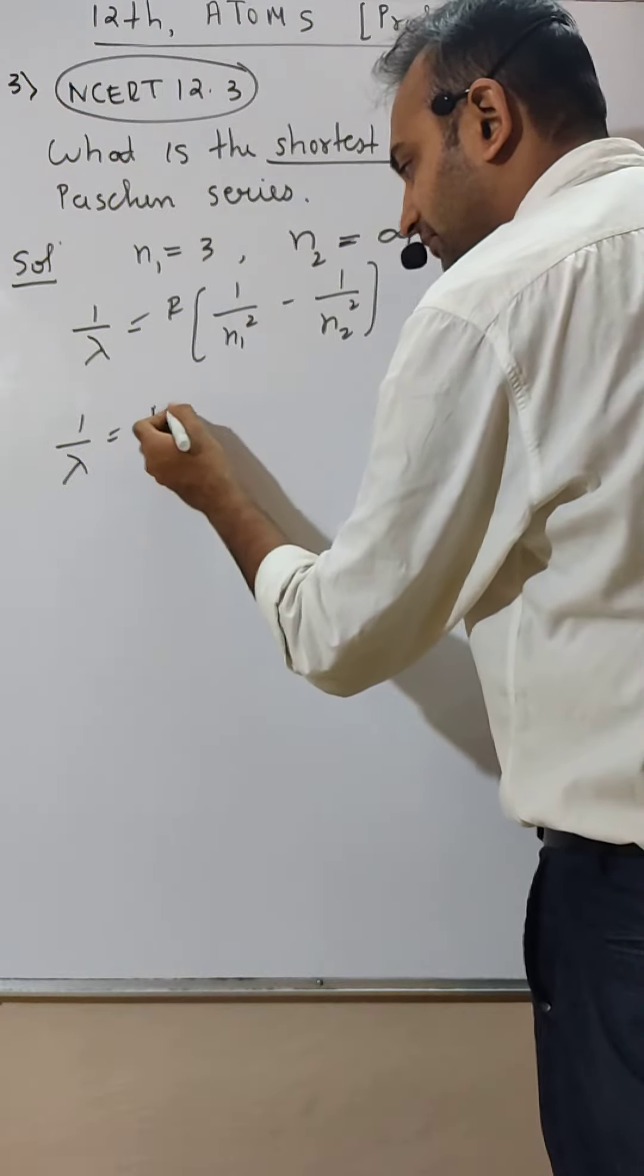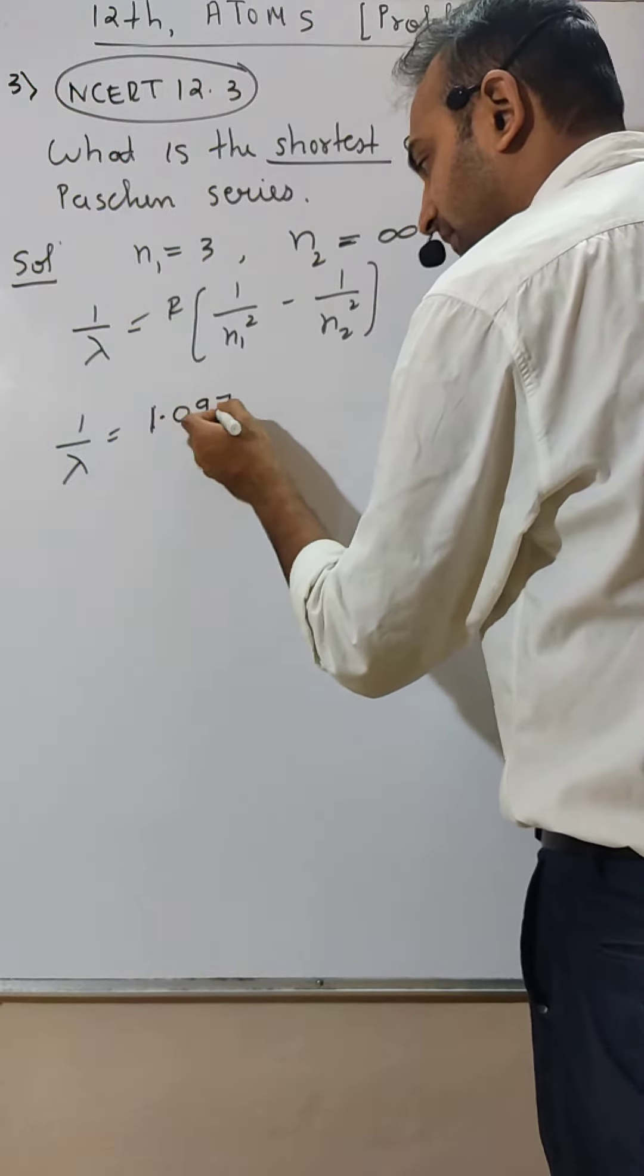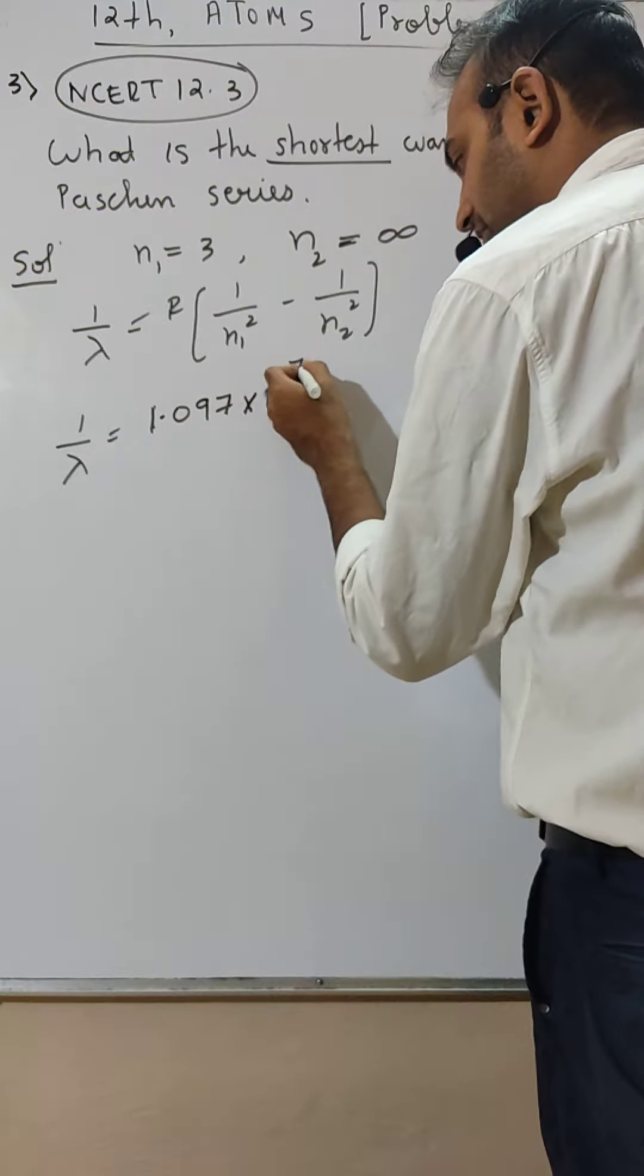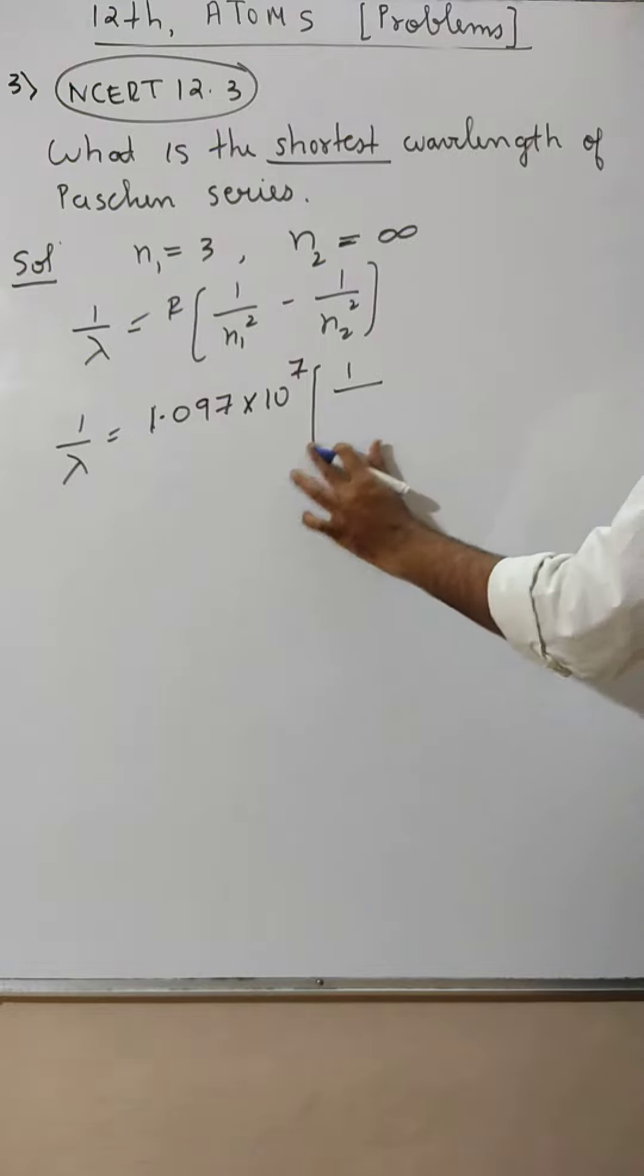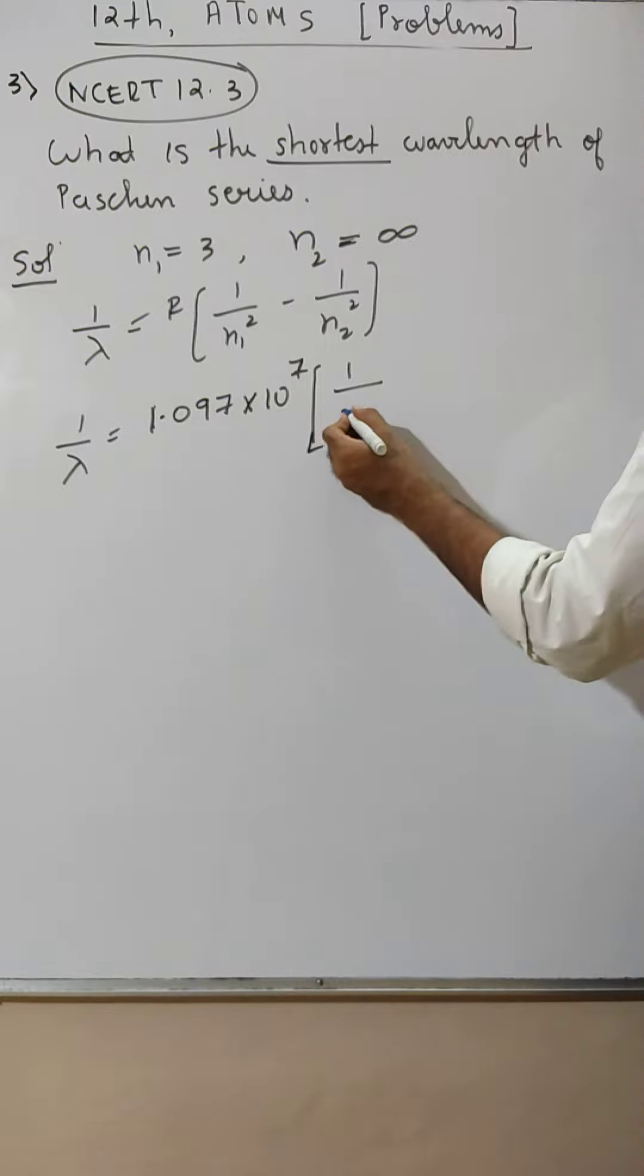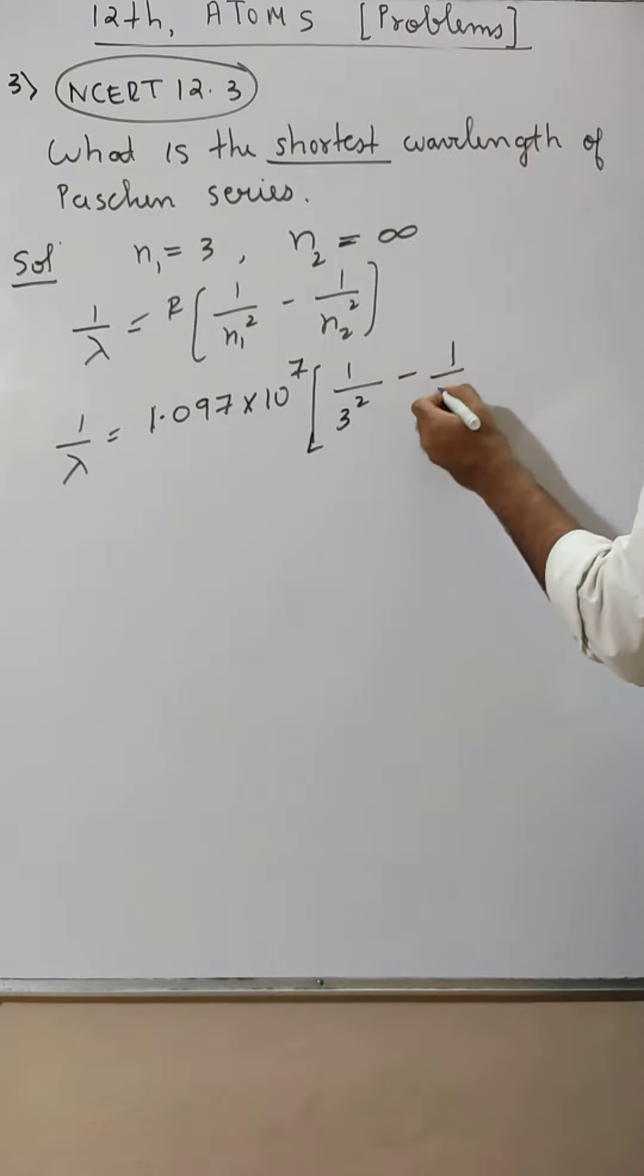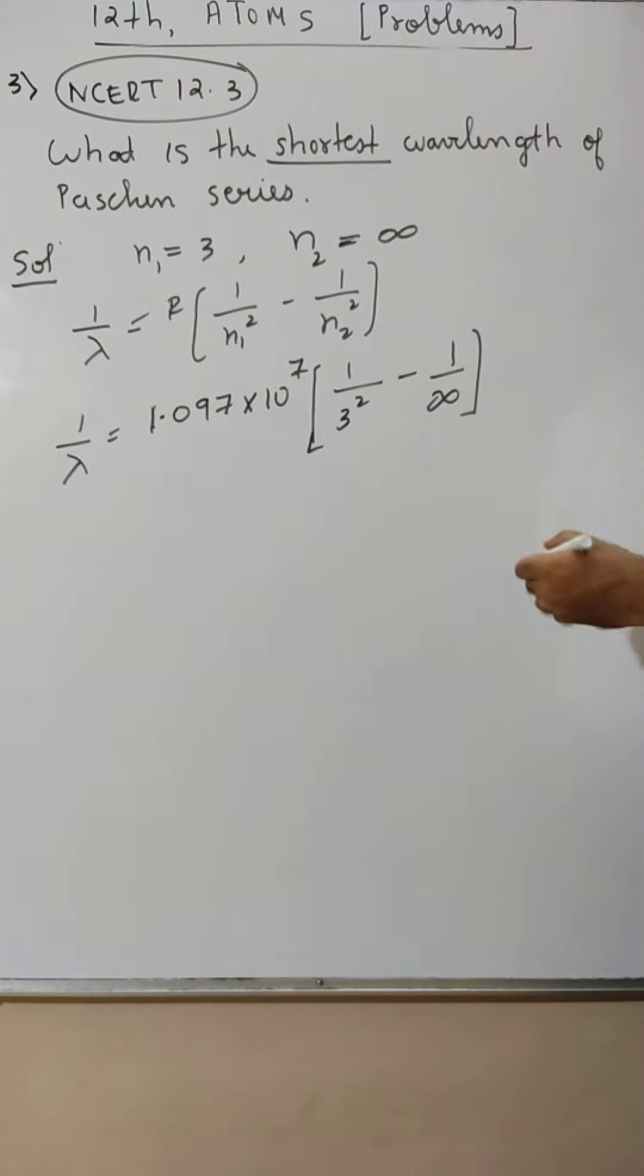They have given 1.097 into 10 raised to 7 bracket 1 upon n1 square. 1 upon n1 square is 3 square minus 1 by infinite. 3 square is 9.